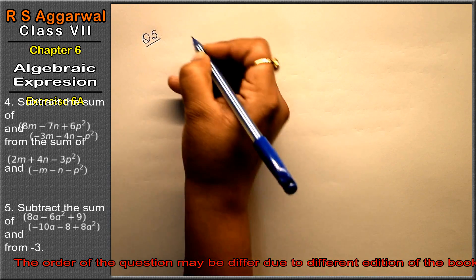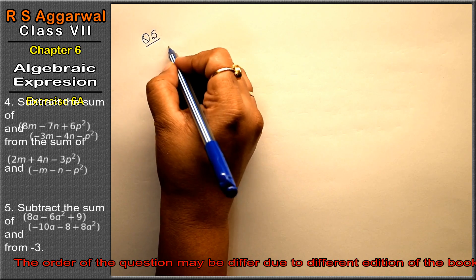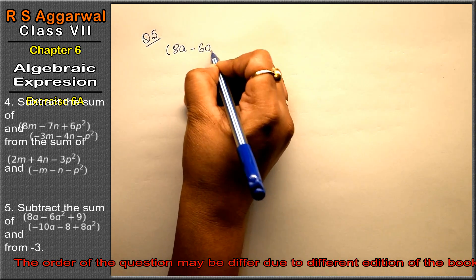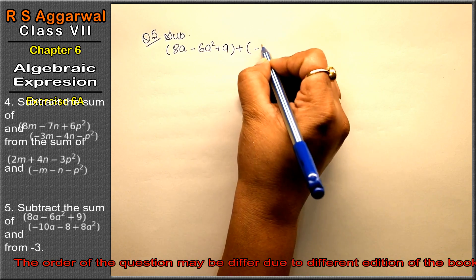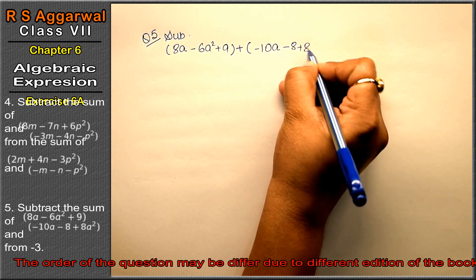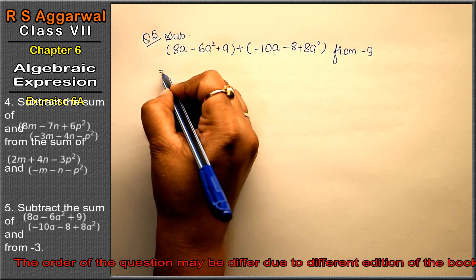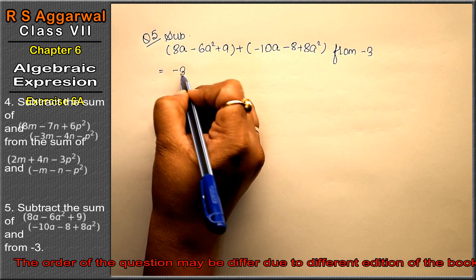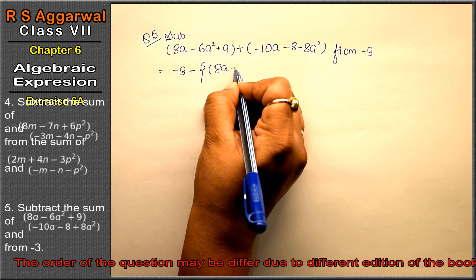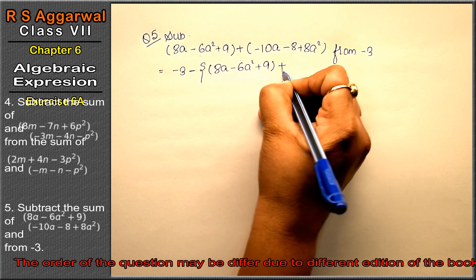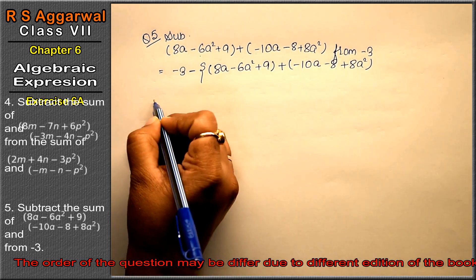Now let's do question 5 of exercise 6a, algebraic expressions. Question 5 says: subtract the sum of 8a minus 6a² plus 9 and minus 10a plus 8a² from minus 3. As stated, we write from's expression first, that is minus 3, then subtract: 8a minus 6a² plus 9 plus minus 10a minus 8 plus 8a².